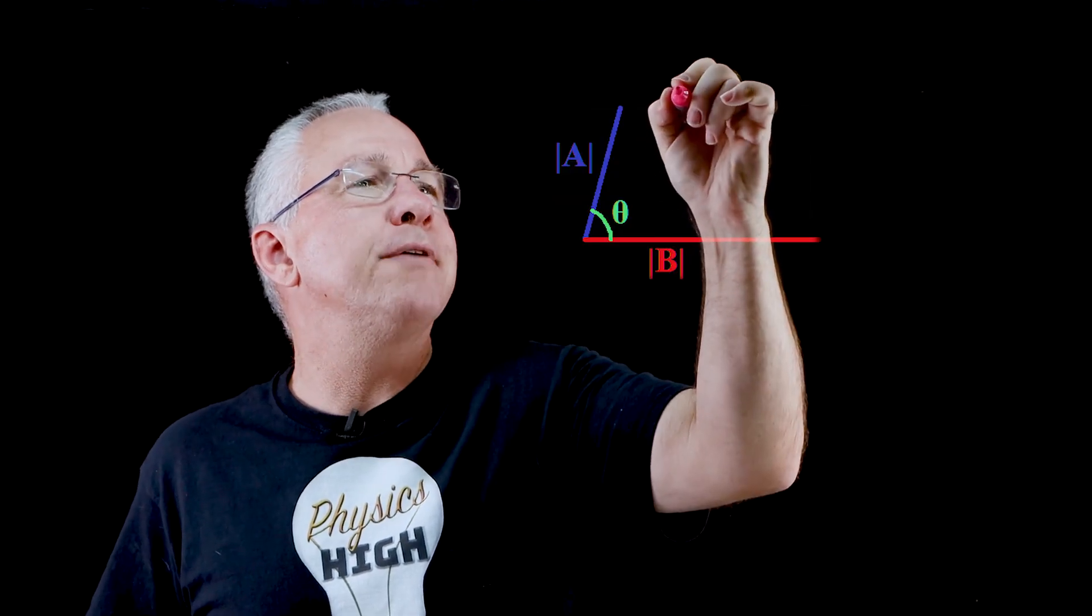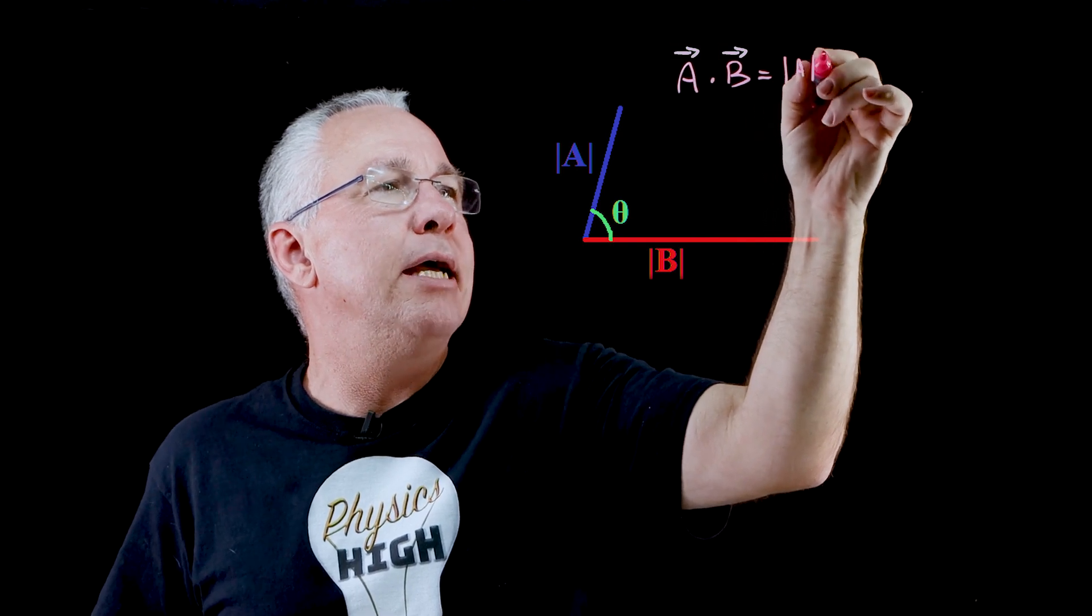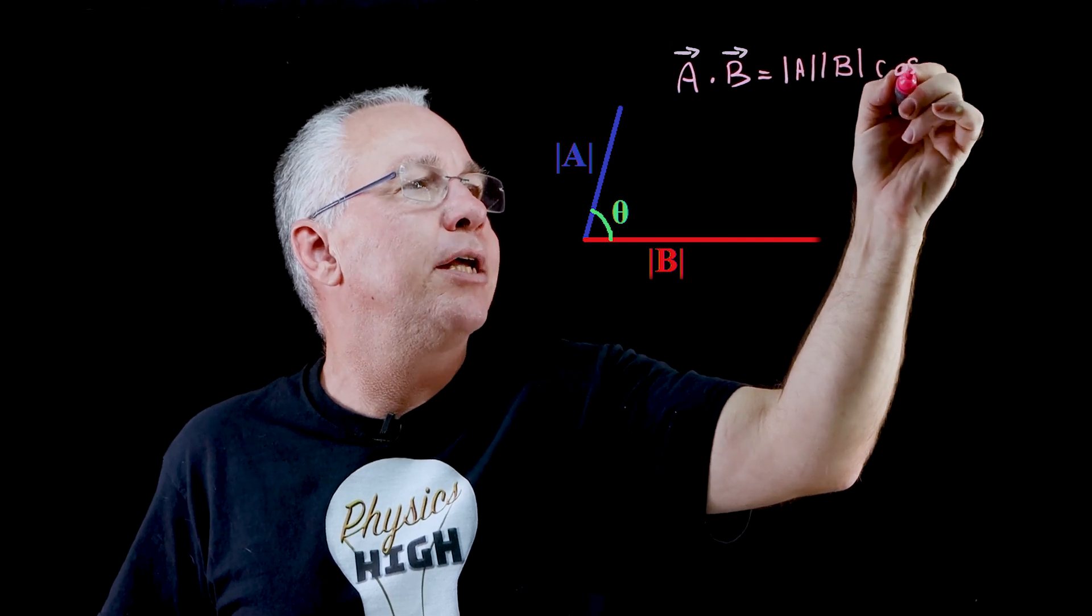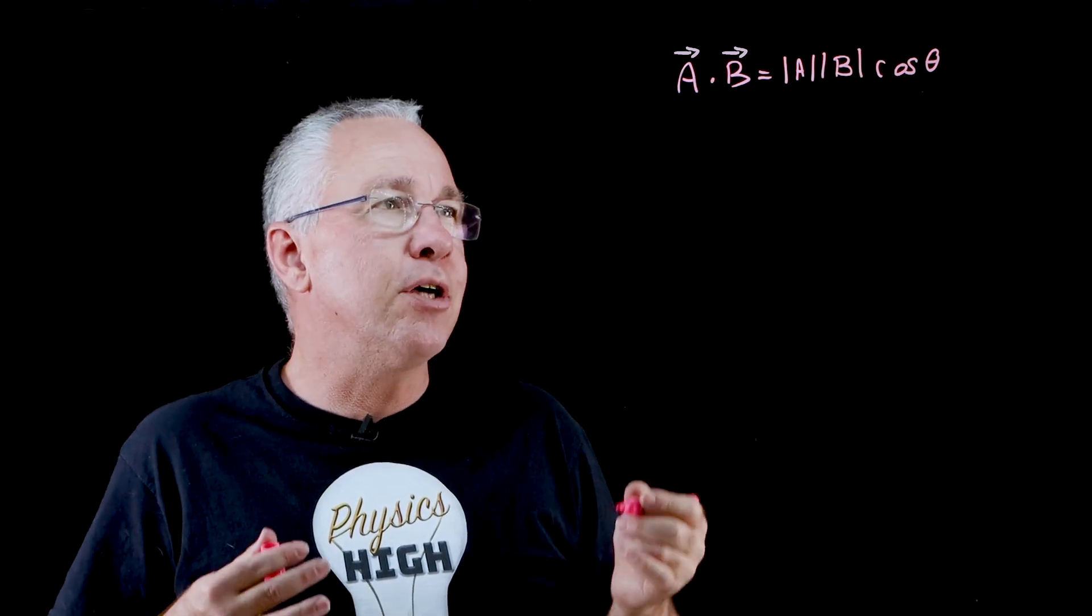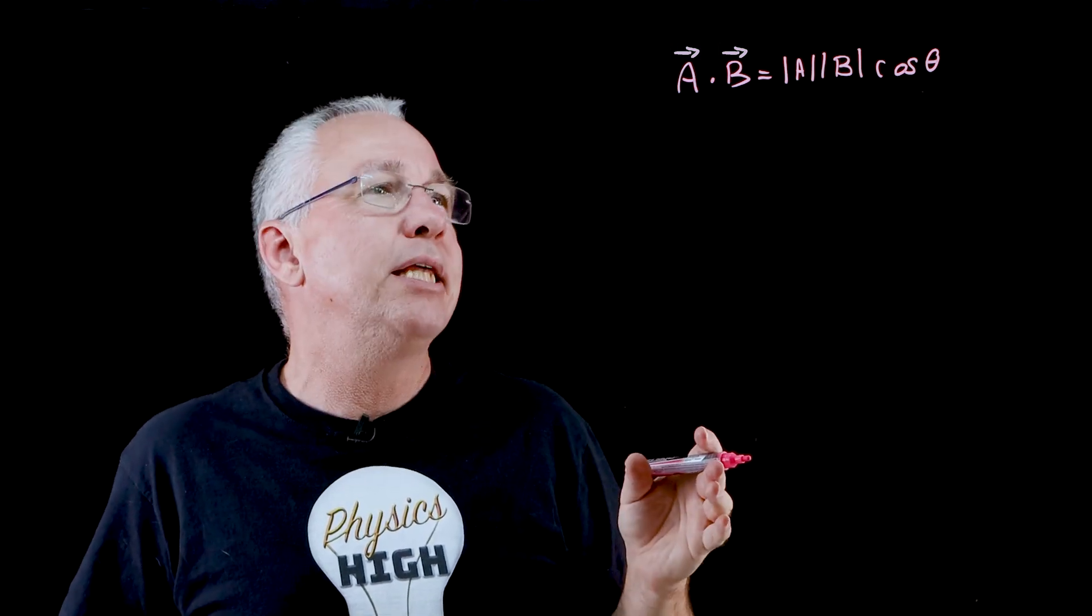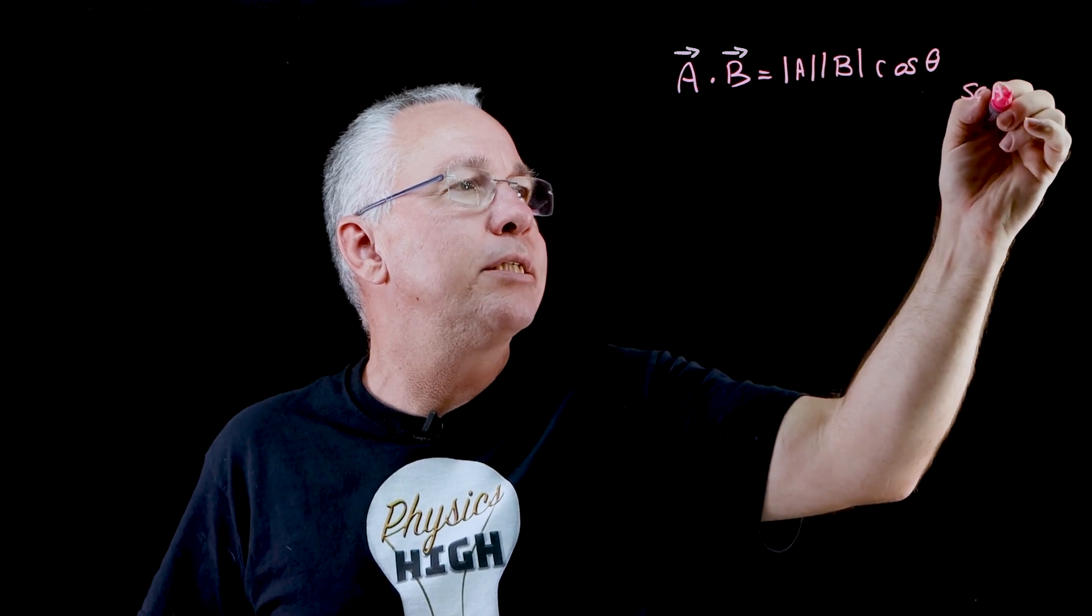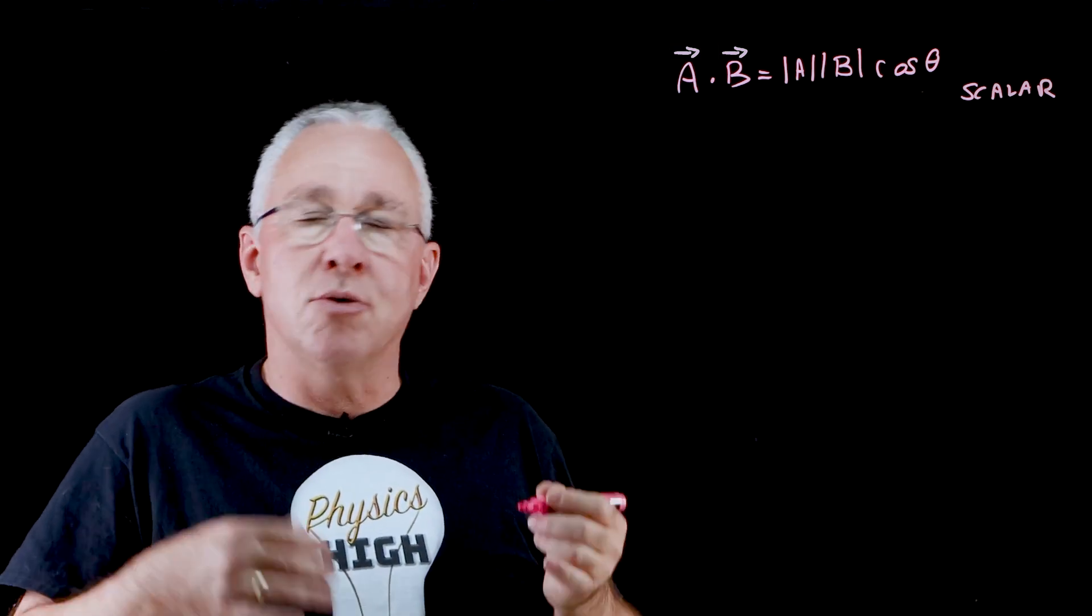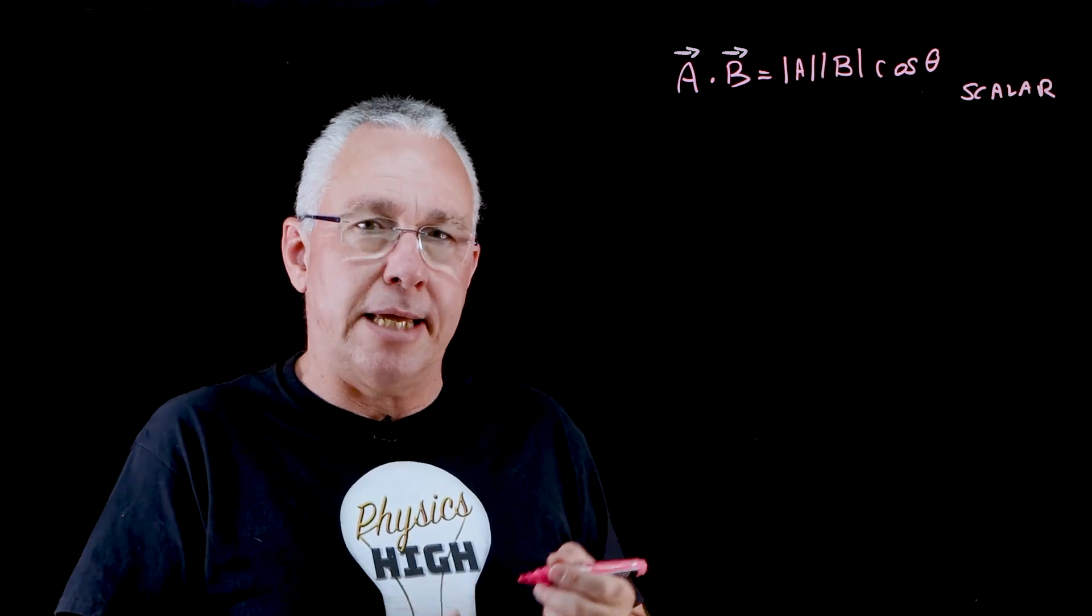The dot product of two vectors A dot B is equal to the magnitude of A multiplied by the magnitude of B multiplied by the cosine of the angle that exists between the two vectors. Because of the fact that A and B are just implicitly magnitudes in the end, this answer ends up always being a scalar quantity. That also means that it doesn't matter which you multiply first. So I could do A dot B, I could do B dot A, I end up getting exactly the same result.